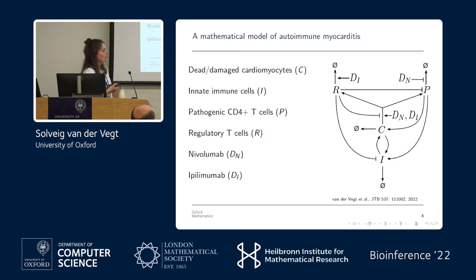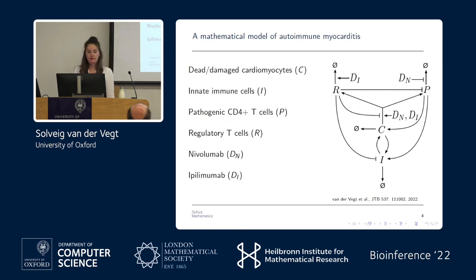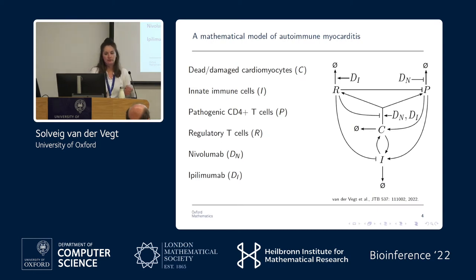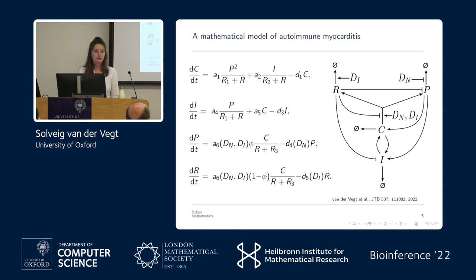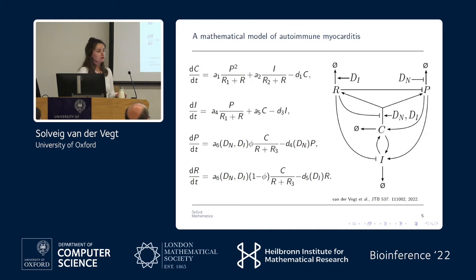In the middle are dead or damaged cardiomyocytes, which release cardiac antigen and stimulate autoimmunity. We have our pathogenic T cells P and innate immune cells I, activated either directly by this antigen or by the pathogenic T cells — both of which can cause further damage to the myocardium. Our T regulatory cells provide the brakes on the immune system, inhibiting this autoimmune cycle. We translated this diagram into a set of ODEs — four ODEs and 13 parameters, which is as minimal as we could make it while still capturing the expected behaviour.